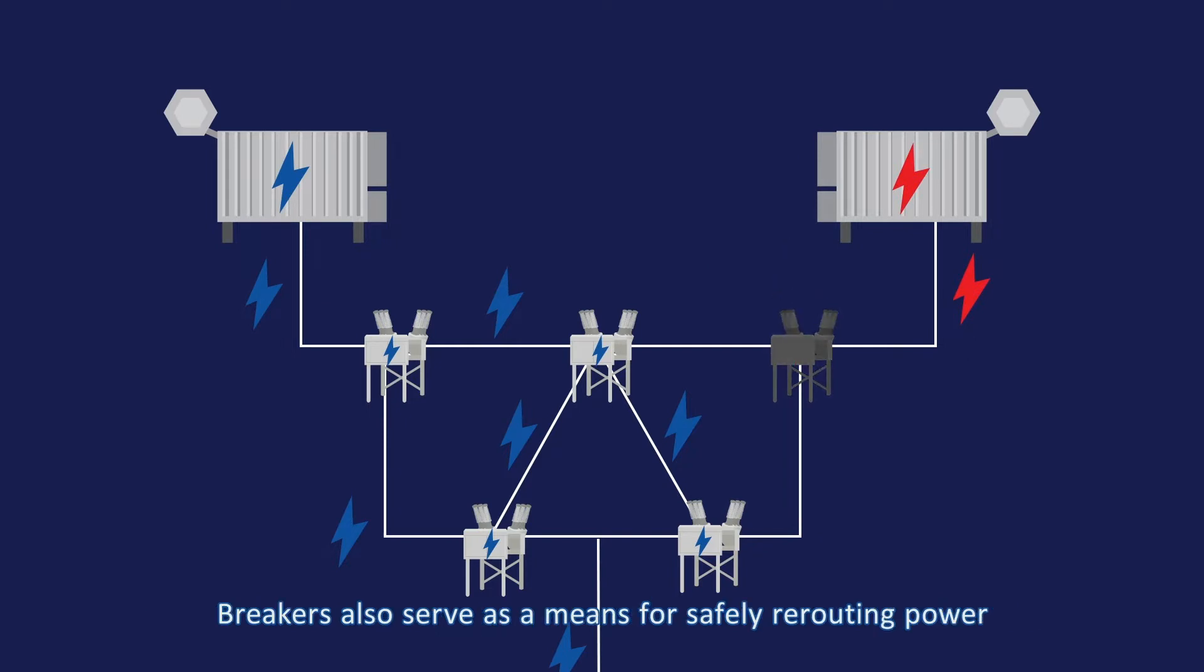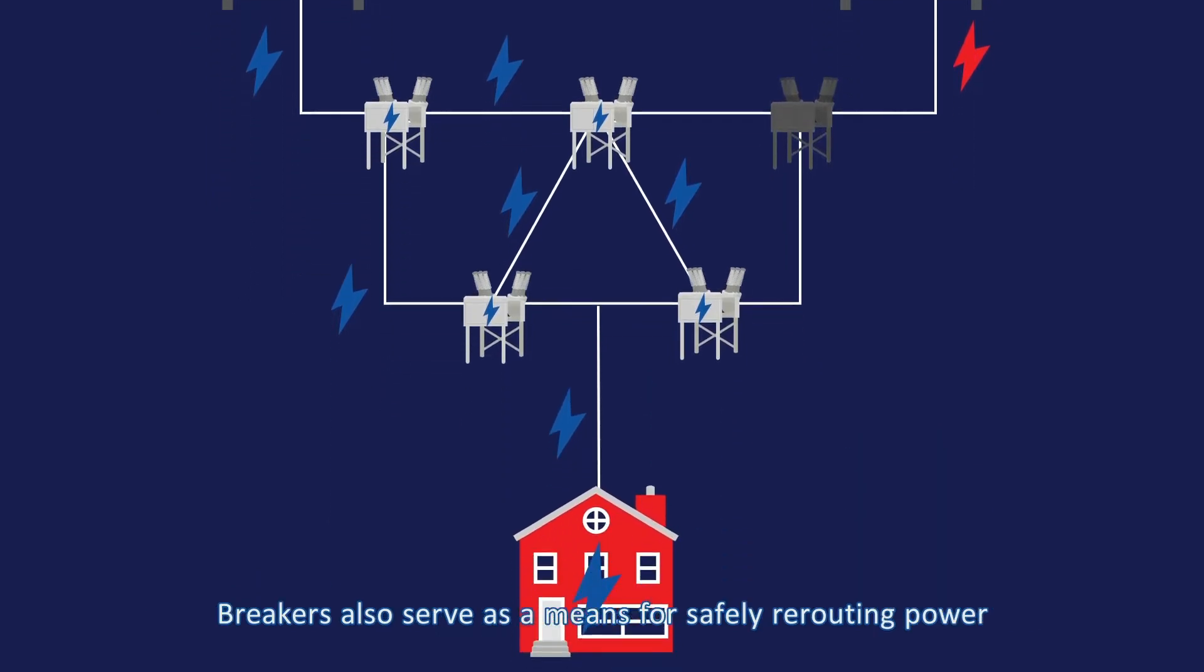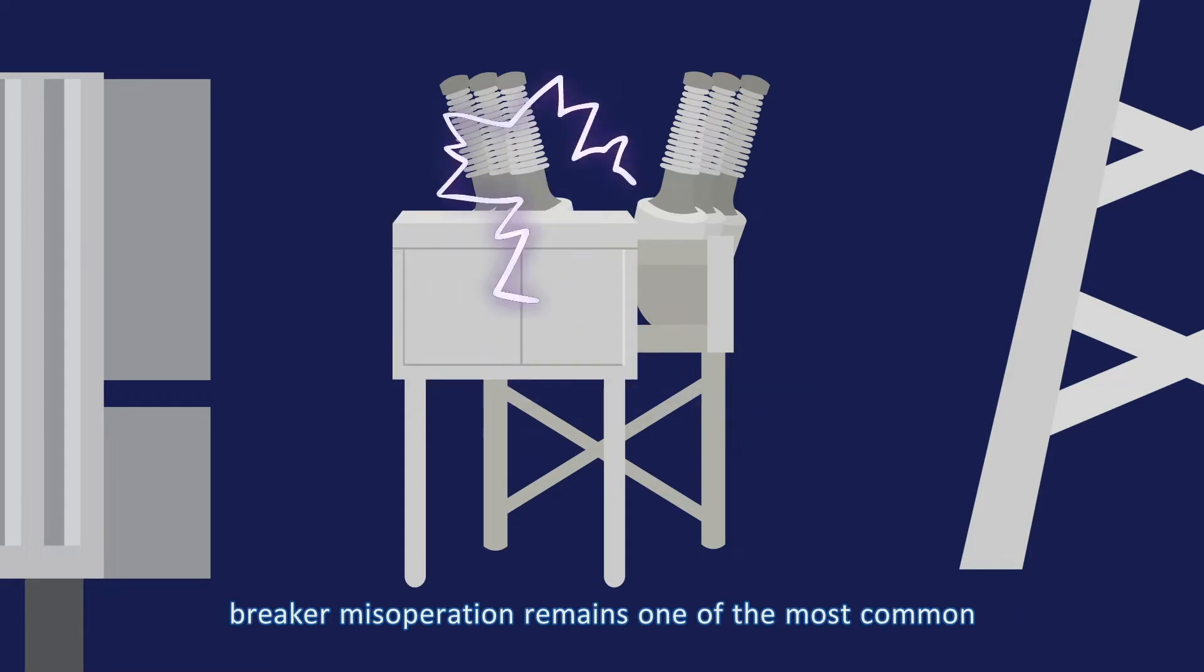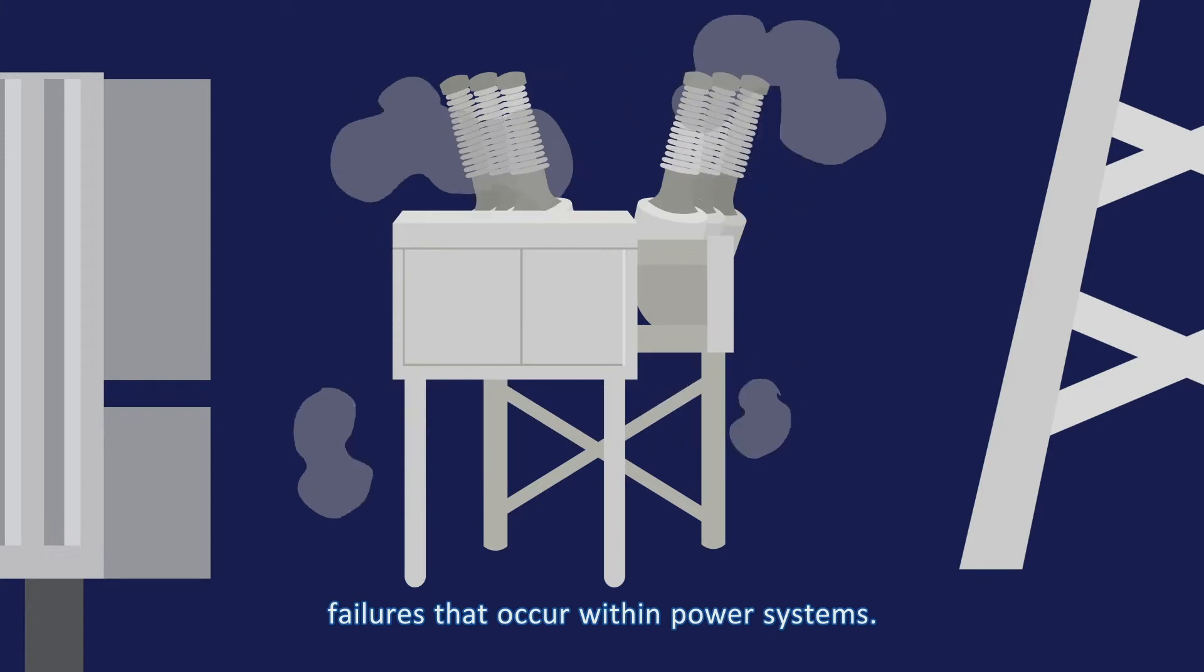Breakers also serve as a means for safely rerouting power without disrupting supply to the end user. Despite the critical role these devices have on overall safety and reliability, breaker misoperation remains one of the most common failures that occur within power systems.